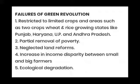Let us begin with discussing the failures of the green revolution. Number 1: The green revolution was restricted to limited crops and limited areas. It was only wheat and rice which benefited from the green revolution, and it was the prosperous states like Punjab, Haryana, UP, and Andhra Pradesh which successfully adopted the technologies under green revolution.